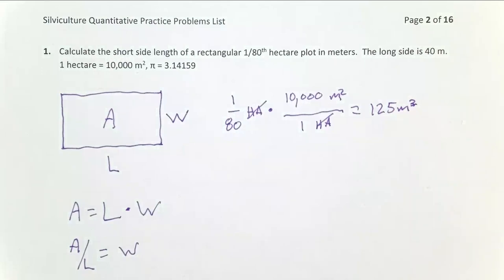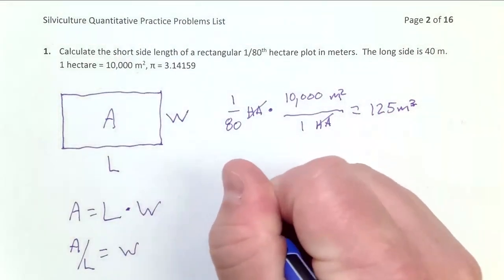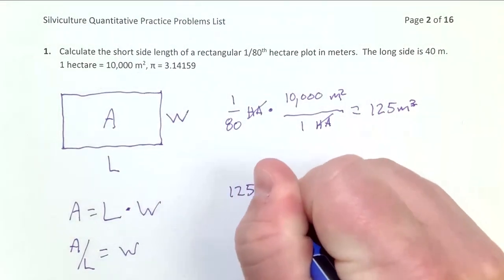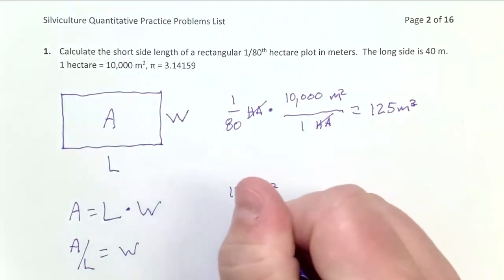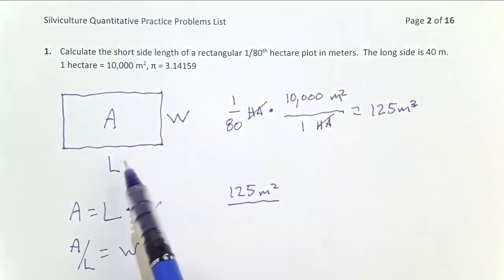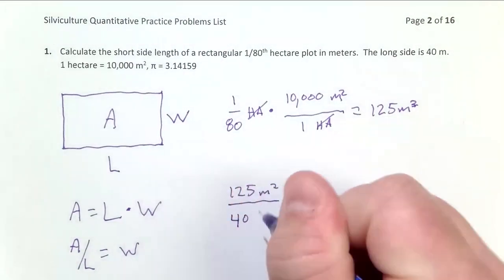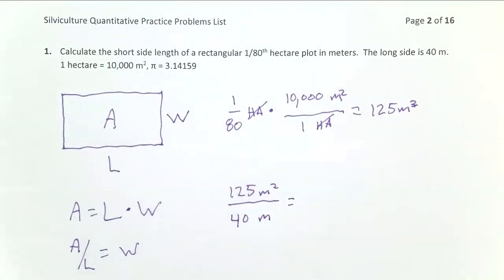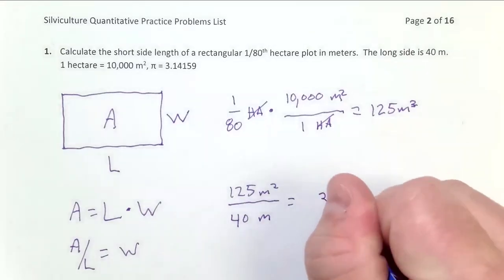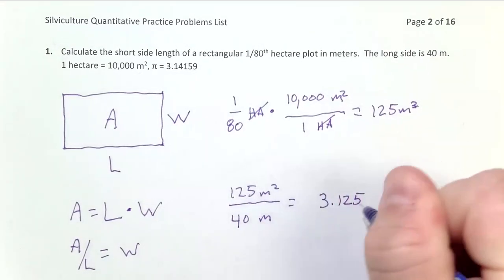Now once we have 125 meters squared, we have the area. So we can go back to this formula here. Area over length equals width. And so I can do 125 meters squared divided by the length here, which is 40 meters. Plug that into a calculator. You'll notice that the units, one of the meters cancels out of that meter squared. The final units are meters. And that's going to equal 3.125 meters.